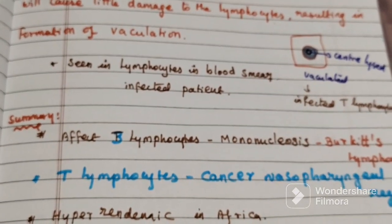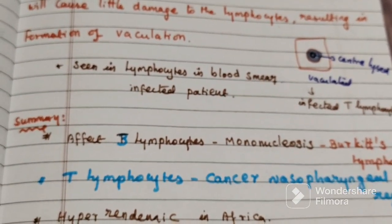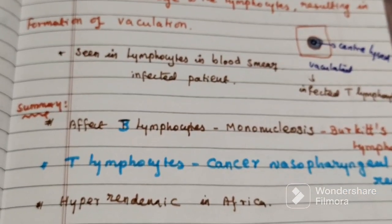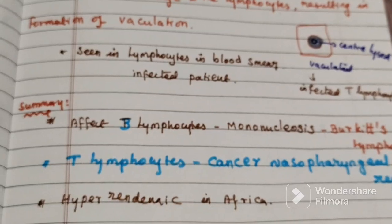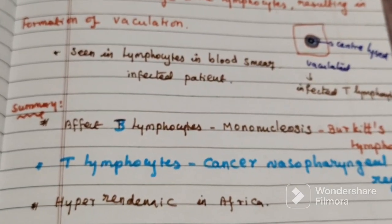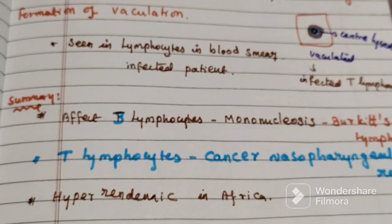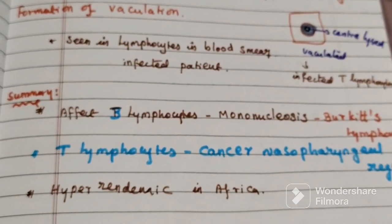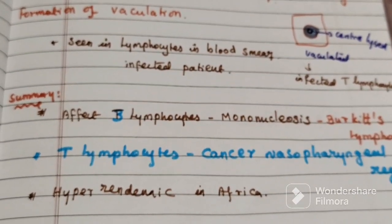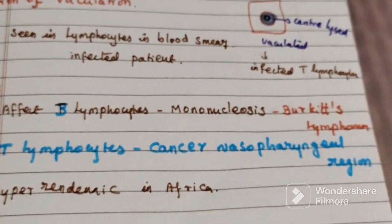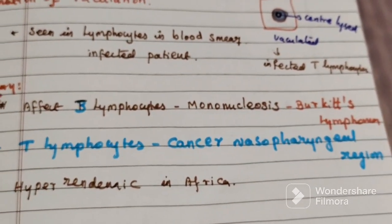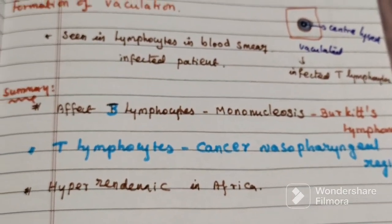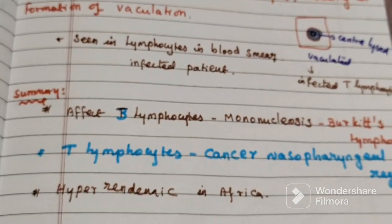EBV also causes cancer in the nasopharyngeal region. This virus causes a hyper-endemic condition in Africa. These are the main aspects of EBV pathogenesis: Burkitt's Lymphoma, mononucleosis in T-cells, and nasopharyngeal carcinoma.